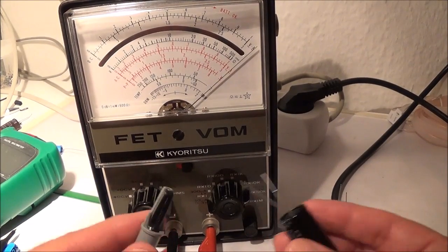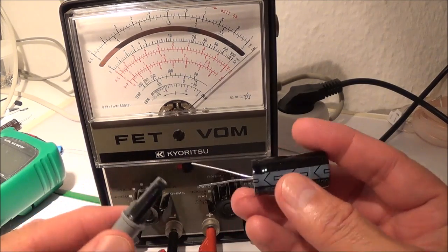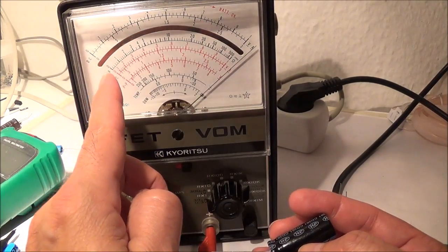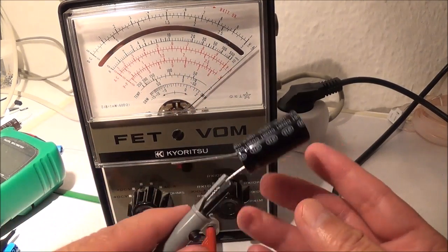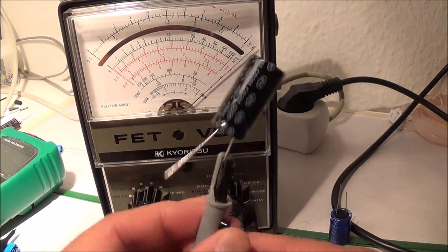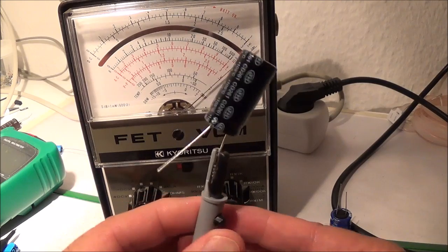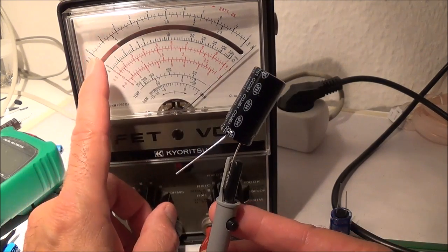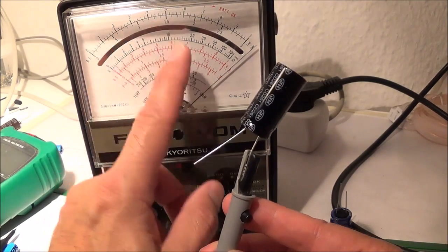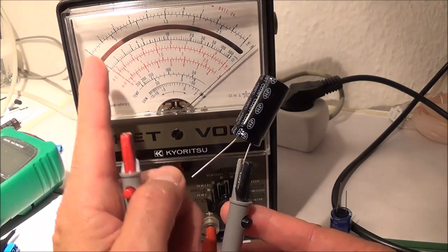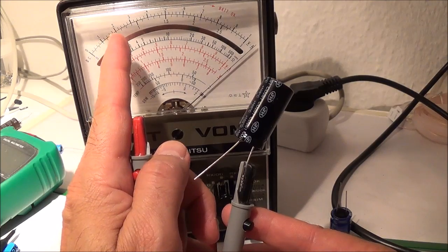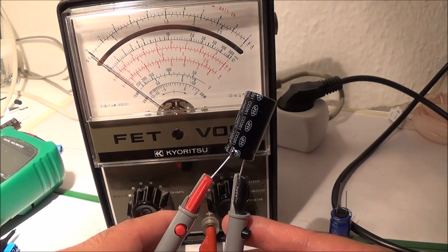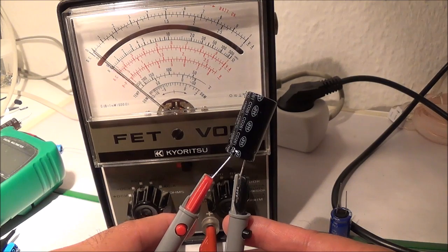So I discharge it again in the meantime. Now the meter should go over to the left and then climb back up. Now with a capacitor this size - this is a 100 microfarad capacitor - if it were to stay in this position then the capacitor would be open. And if it would go all the way over to the left and not come back up, then we can reasonably conclude that it's shorted. Or if it would go down and then stop at some kind of a low value... oh there it goes and it's moving.